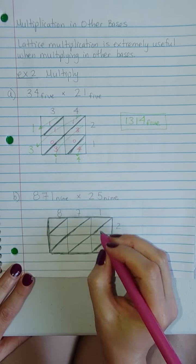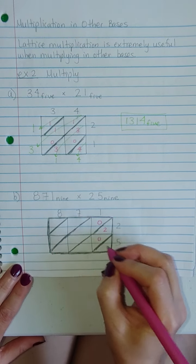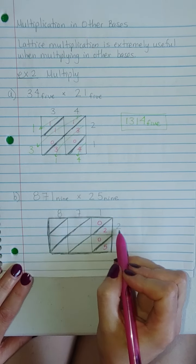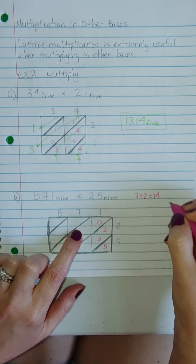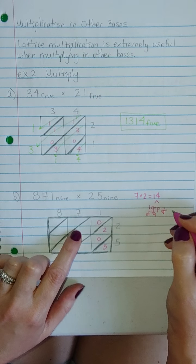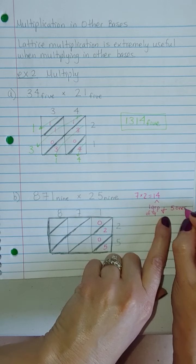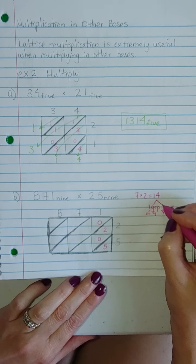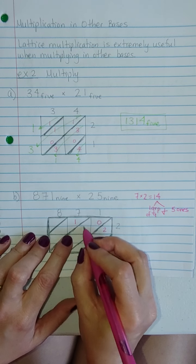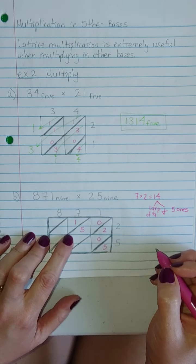So when we multiply, we got to remember that everything's in base 9. So 1 times 2 is 2. 1 times 5 is 5. 7 times 2 is 14. Don't write 1, 4. That's a base 10 number. So 7 times 2 is 14. That is 1 group of 9 and 5 left over. That's a base 10 number. So I have to convert it to a base 9 number.